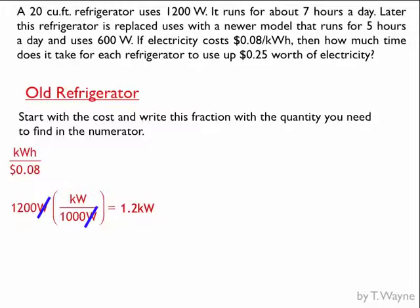Now I could also just move the decimal place over to the left three decimal places since it's 1,000. Now I'll get rid of the kilowatts in the fraction that I've written by putting it in the denominator. So 1 over 1.2 kilowatts.